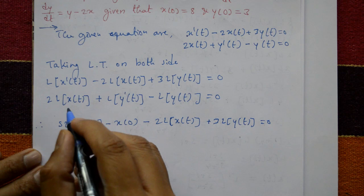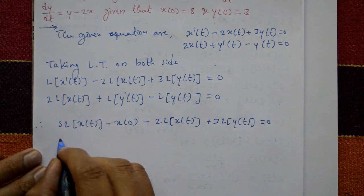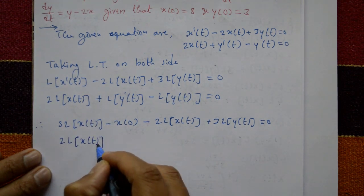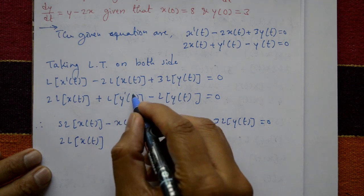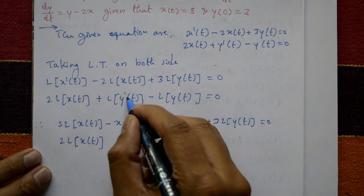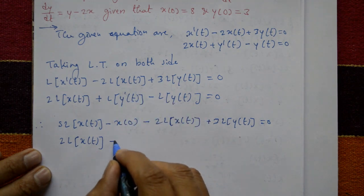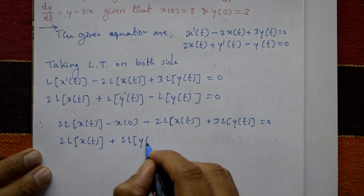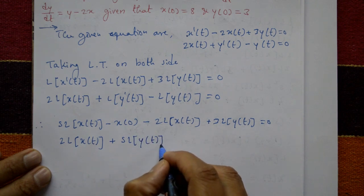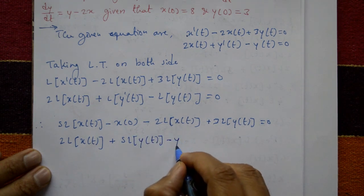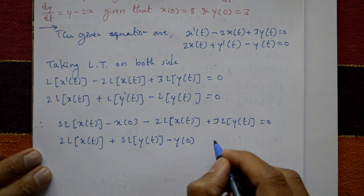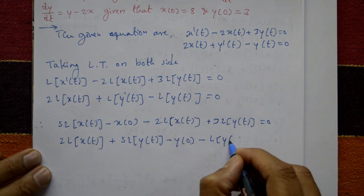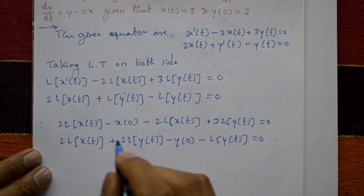For the second equation, the first term 2·Laplace[x(t)] stays as is. Applying the derivative formula: s·Laplace[y(t)] − y(0) − Laplace[y(t)] = 0.